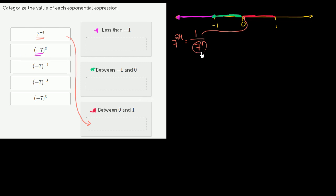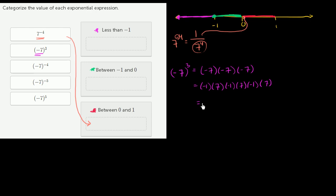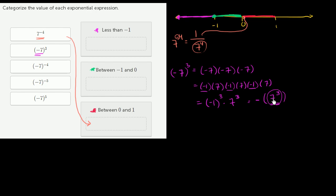Now let's think about negative 7 to the third power. This is the same as negative 7 times negative 7 times negative 7, which we can rewrite as negative 1 to the third power times 7 to the third power. Negative 1 to the third power: negative 1 times negative 1 is positive 1, then times another negative 1 gives negative 1. So this equals negative 7 to the third power — a large positive value negated. Negative 7 to the third is definitely less than negative 1.